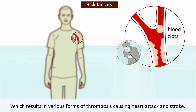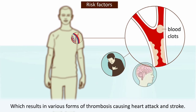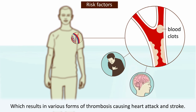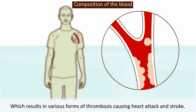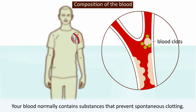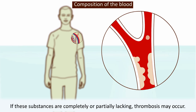This results in various forms of thrombosis, causing heart attack and stroke, etc. Your blood normally contains substances that prevent spontaneous clotting. If these substances are completely or partially lacking, thrombosis may occur.